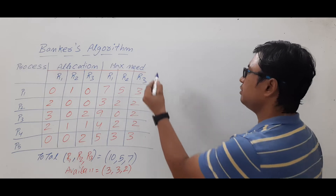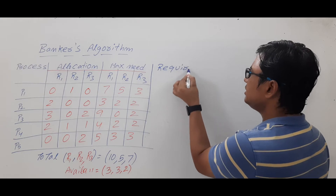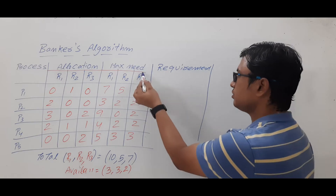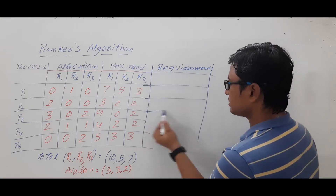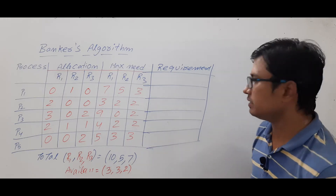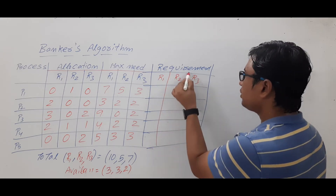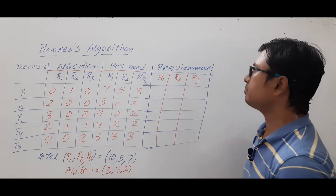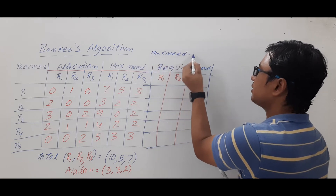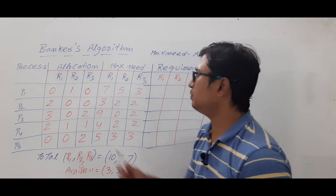Now we will find the future need or requirement of each process. Different textbooks may use different terminology — future need or requirement — but the meaning is the same. The requirement is calculated as max need minus allocation.